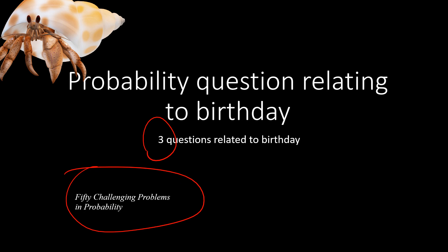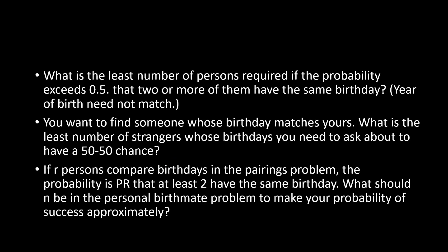The solving strategy is a little bit different for each. The first problem is: what is the least number of persons required such that the probability is 0.5 that two or more of them have the same birthday? This is called the birthday pairing paradox. The second problem: you want to find someone whose birthday matches yours — imagine you go out and ask strangers on the road what their birthday is.